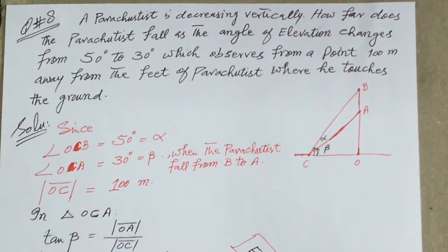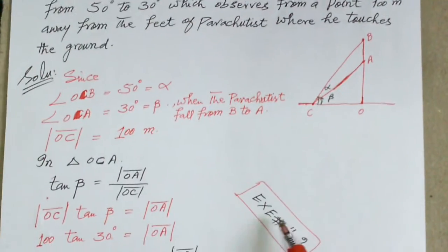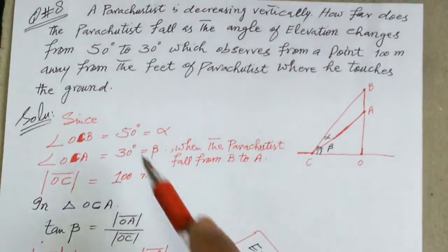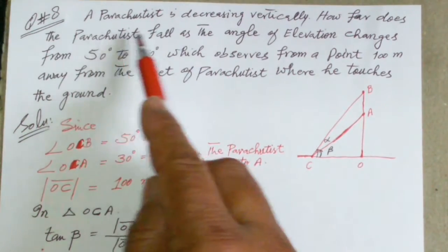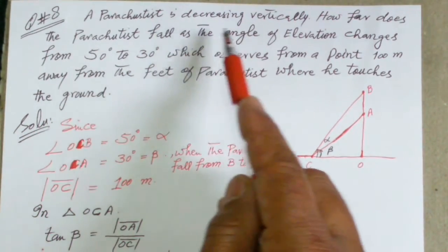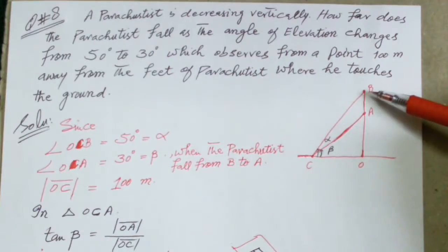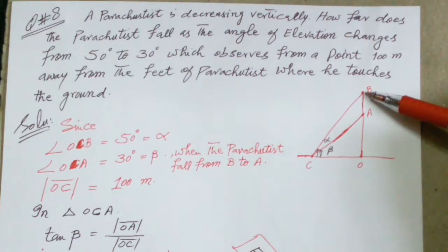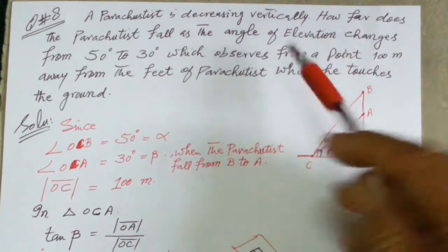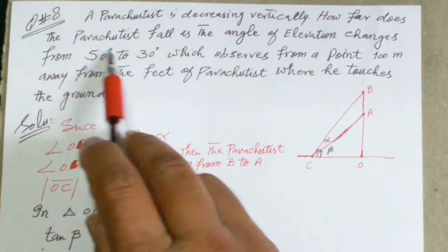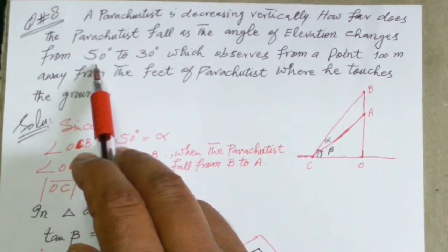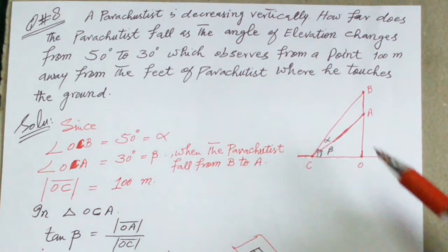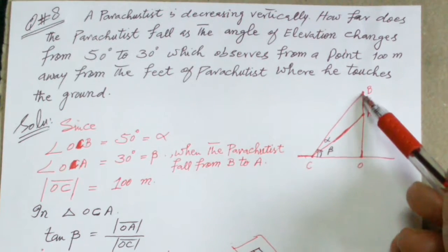Exercise 11.2, question number 8. The question is: a parachutist is decreasing vertically. How far does the parachutist fall when the angle of elevation changes from 50 degrees to 30 degrees?